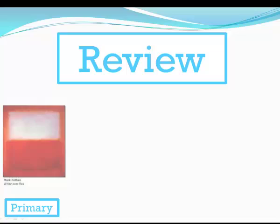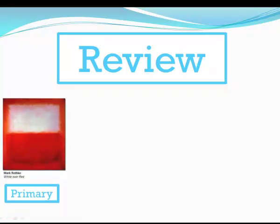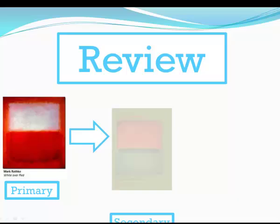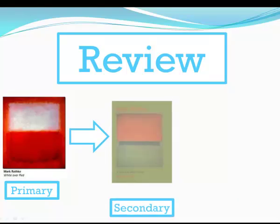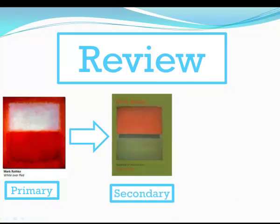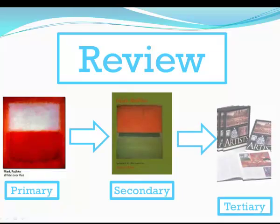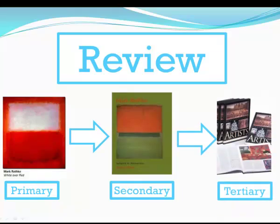Let's quickly review the three. I'm doing research on an art topic. A primary source would be a painting by Mark Rothko. An article or a book analyzing this painting or the artist would be a secondary source, while an encyclopedia containing entries on either would be tertiary.